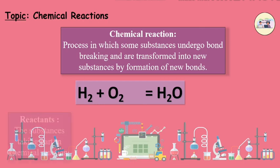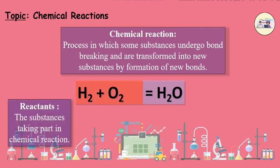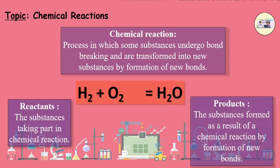The substances taking part in a chemical reaction are called reactants, whereas the substances formed as a result of the chemical reactions by formation of new bonds are called products.